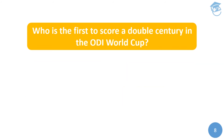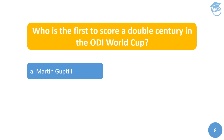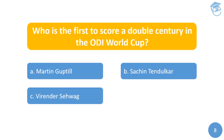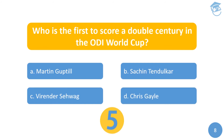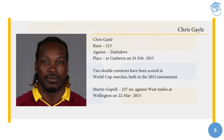Who is the first to score a double century in the ODI World Cup? Your options are A) Martin Guptill, B) Sachin Tendulkar, C) Virender Sehwag, or D) Chris Gayle. The answer is Chris Gayle. While all four have scored double centuries in ODIs — and Rohit Sharma has scored two — in an ODI World Cup only two players have done it: Chris Gayle scored 215 against Zimbabwe at Canberra on 24th February 2015, and Martin Guptill scored 237 not out against West Indies at Wellington on 22nd March 2015.